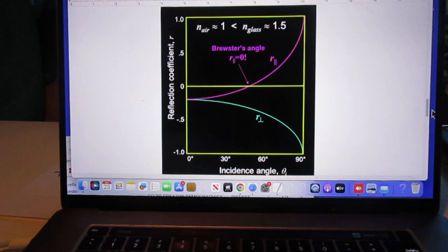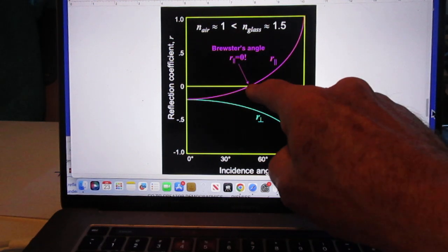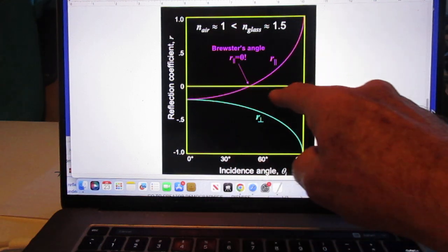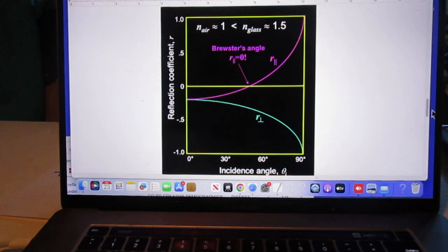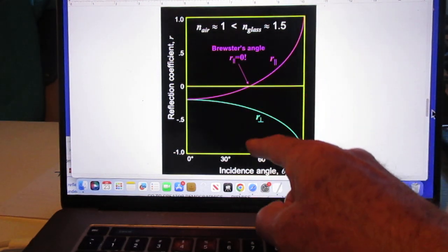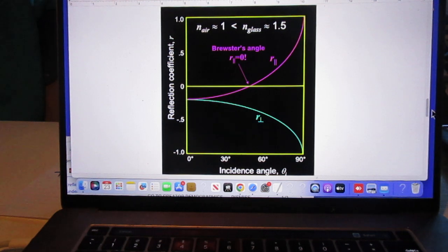Look at this picture. You see here R parallel and you see R perpendicular as a function of angle. When you look here, then R parallel is zero. And so, if you go down now, R parallel is zero at the angle, that's where the 56.3 degrees is.